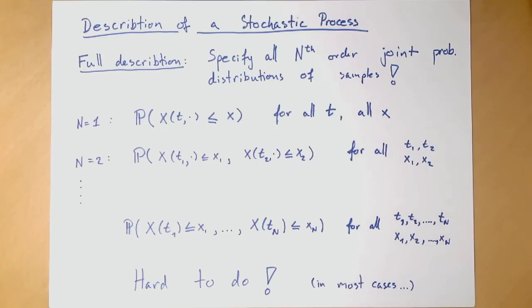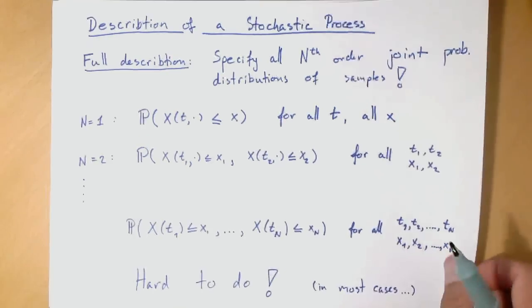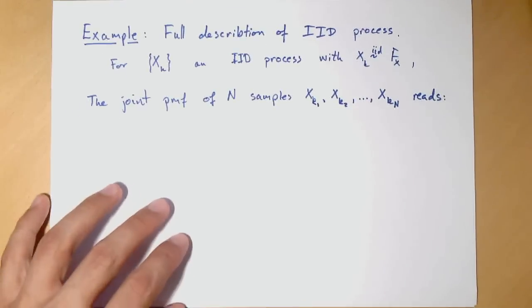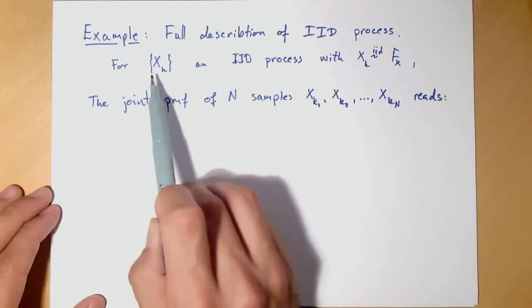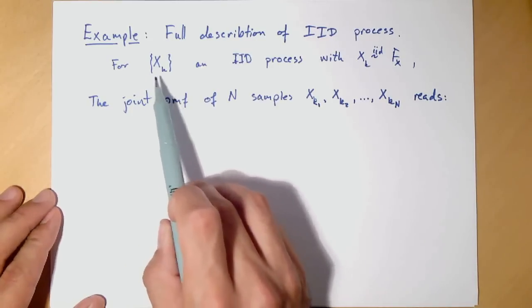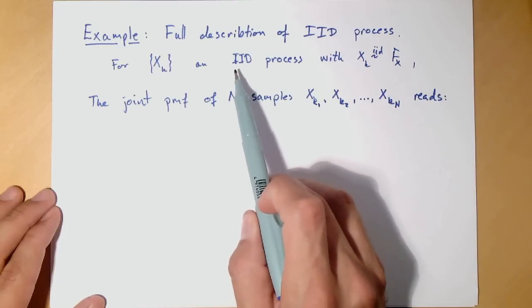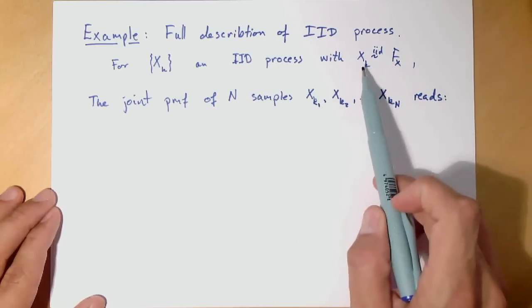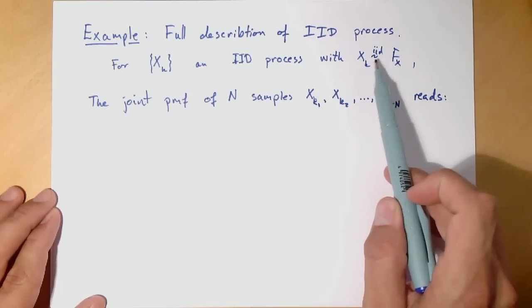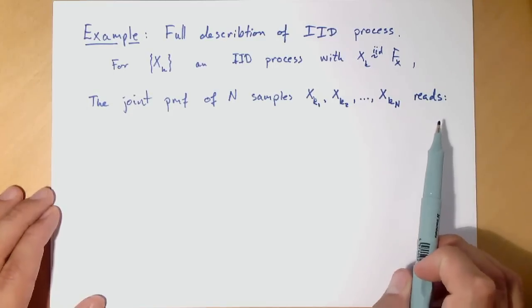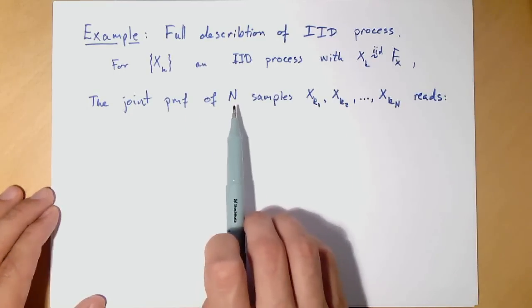One of such cases is the IID process that we have looked at before. So to exemplify what it means to make a full description of a stochastic process, we'll be looking at an IID process x_k, a discrete time process. This is a discrete time process where each sample has the same probability mass function f, and all samples are independently identically distributed.